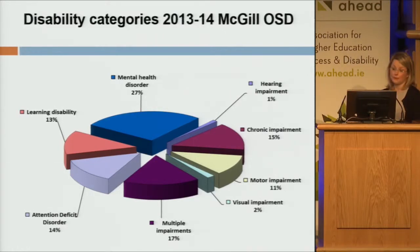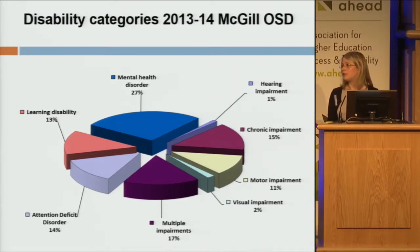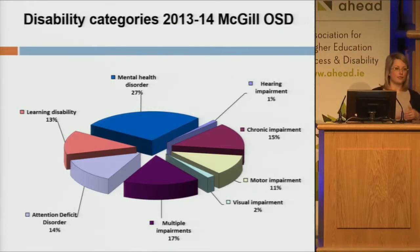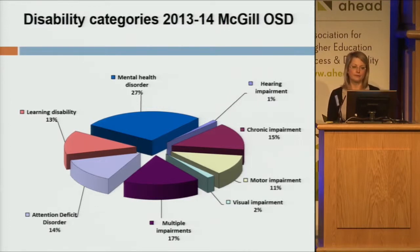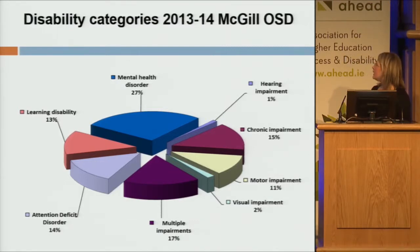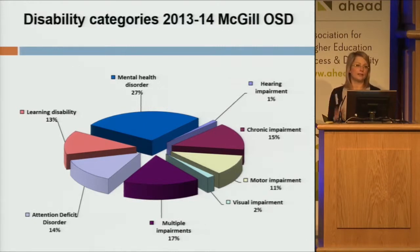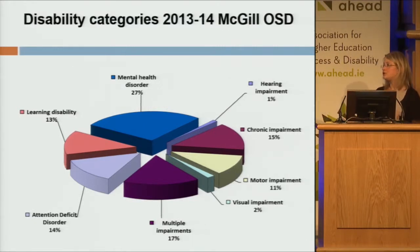In terms of disability categories, mental health — at 27% — really constitutes the largest number of students registered. That includes depression, anxiety, bipolar, schizophrenia — a whole range of mental health disabilities we see on campus. It's closely followed by attention deficit disorder at 14%, learning disabilities at 13%, multiple impairments at 17%, chronic impairments at 15%, and only a very small number of students have what we call traditional disabilities.